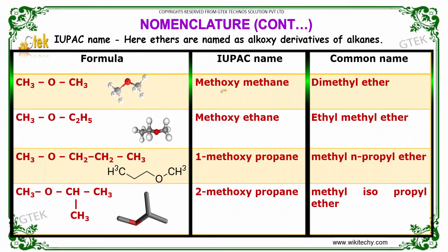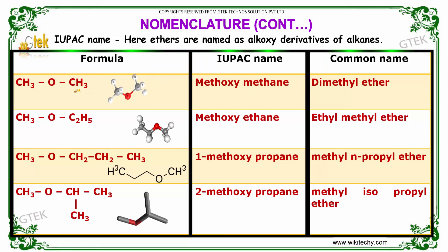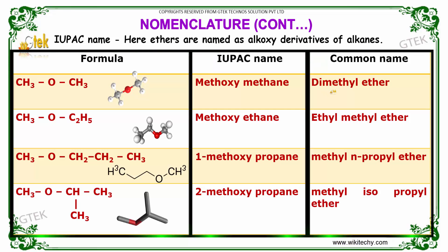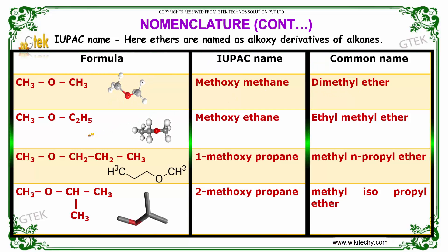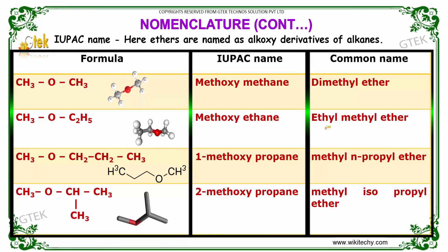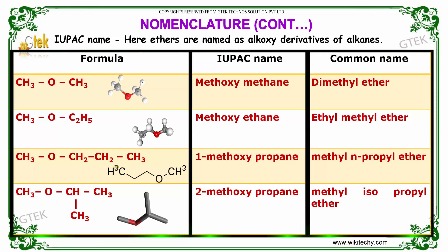There are differences between the IUPAC name and the common naming. For example, taking the formula CH3OCH3, its IUPAC name is methoxy-methane, whereas its common name is dimethyl ether. For CH3OCH2CH5, its IUPAC name is methoxy-ethane, whereas its common name is ethyl-methyl ether.